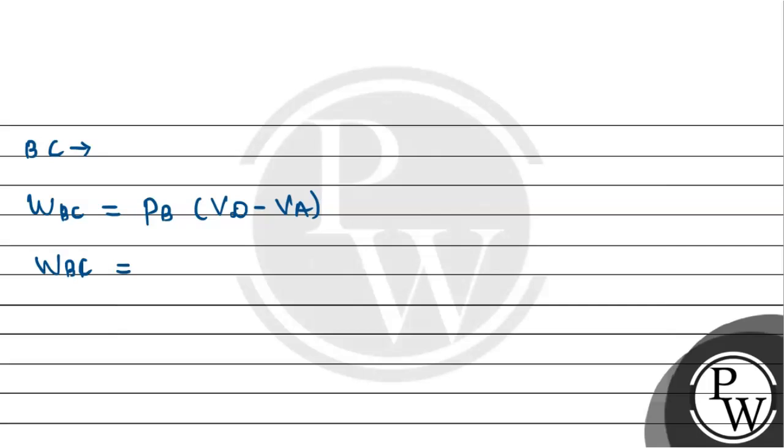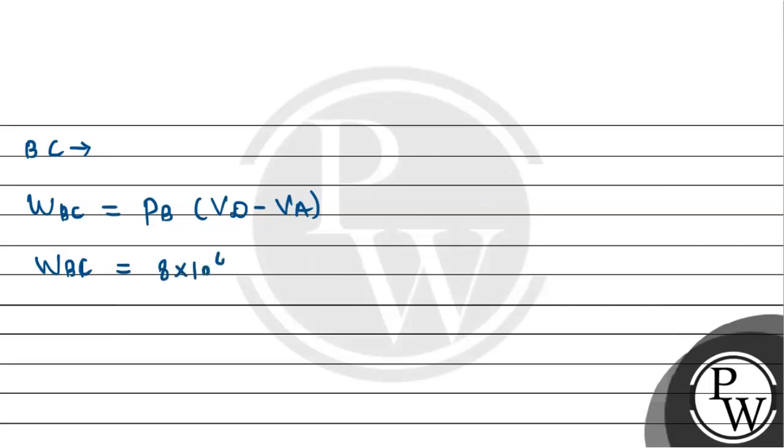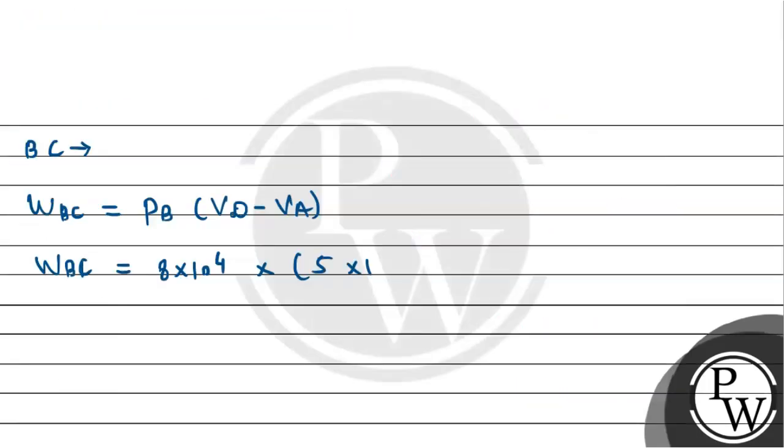So the work W_BC will equal pressure at point B, which is 8 × 10⁴ Pascal, multiplied by (5 × 10⁻³ - 2 × 10⁻³) m³. This gives us 8 × 10⁴ × 3 × 10⁻³, which equals 240 J. This is the amount of work done along path BC.